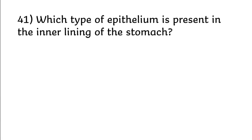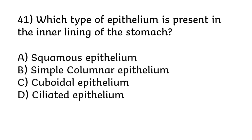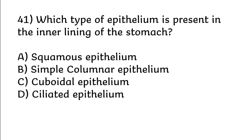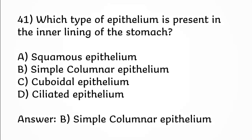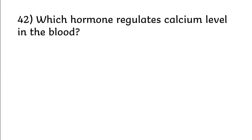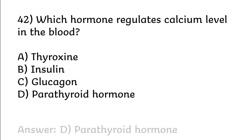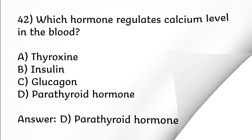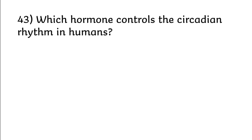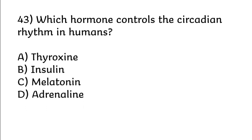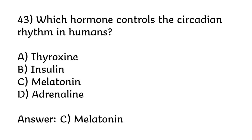Which type of epithelium is present in the inner lining of the stomach? Options: squamous epithelium, simple columnar epithelium, cuboidal epithelium, ciliated epithelium. Correct answer is option B: simple columnar epithelium. Which hormone regulates calcium levels in the blood? Options: thyroxine, insulin, glucagon, parathyroid hormone. Correct answer is option D: parathyroid hormone. Which hormone controls circadian rhythm in humans? Options: thyroxine, insulin, melatonin, adrenaline. Correct answer is option C: melatonin.